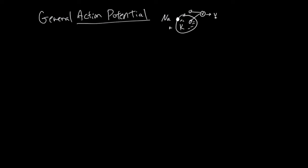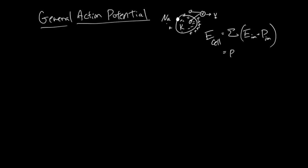In general, by default, the cell is negatively charged inside than outside. It's important to understand why this is the case. The E for the action potential of the cell is actually the sum of all the action potentials of ions multiplied by the permeability of that ion. For general action potential, let's use just Na and K. This equals the permeability of Na multiplied by the action potential of a system where only Na moves in and out, plus the permeability of K times the action potential of a K-only moving system.